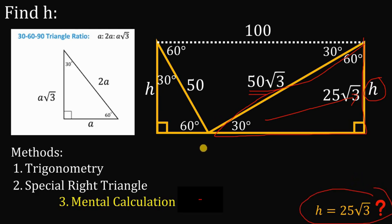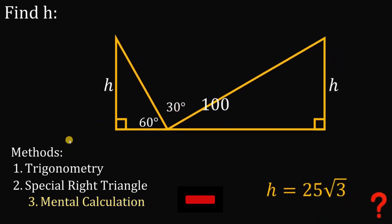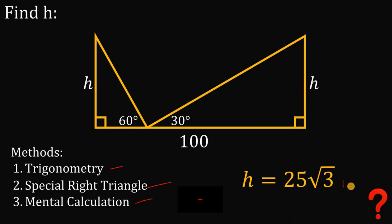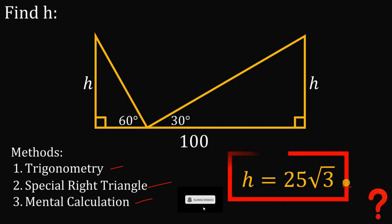Therefore, given this figure and using all three methods, the value of H equals 25 times square root of 3 units. As always, we are done. Thank you.